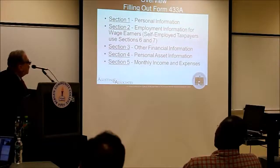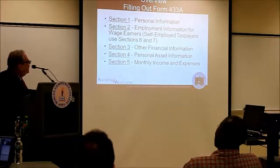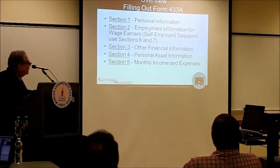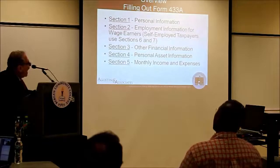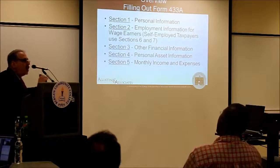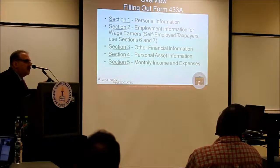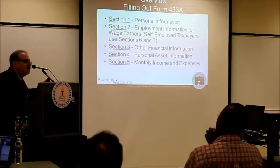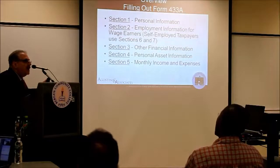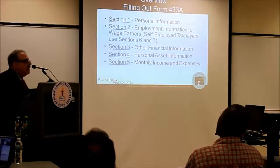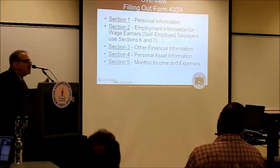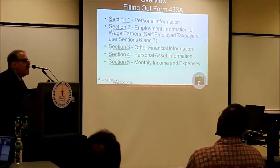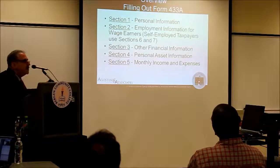How is this form broken out? It's going to be your personal information, employment information, other financial information, income and expenses, and most importantly sections 4 and 5 — your assets and your income — which are going to guide your collection alternatives. If you have lots of assets but no income, they're going to ask you to borrow or liquidate an asset. If you have a lot of income and no assets, you're going to look at long-term payment agreements.